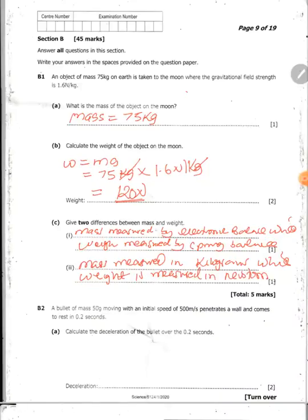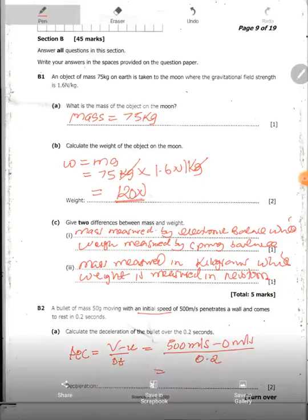Then question B2 says a bullet of mass 50 grams, moving with an initial speed of 500 meters per second, penetrates a wall and comes to rest in 0.2 seconds. Calculate the deceleration of the bullet. Deceleration, also known as negative acceleration, is equal to the change in velocity over the change in time. So the change in velocity, we have 500 meters per second minus 0 meters per second. Remember, this is the initial speed. Divide by the change in time 0.2. So therefore, you have 500 divided by 0.2. You have 2,500.